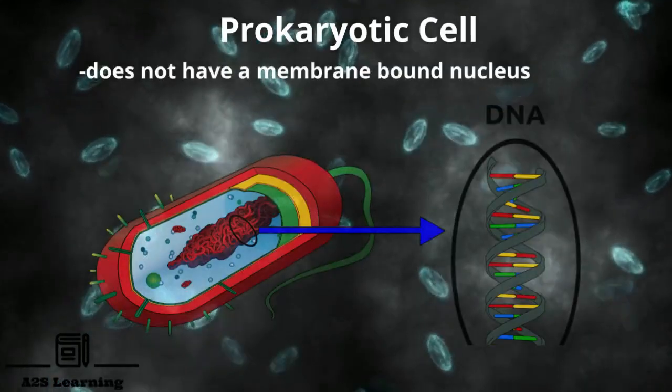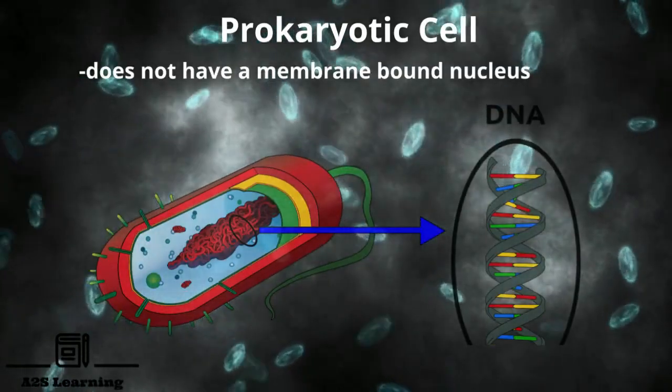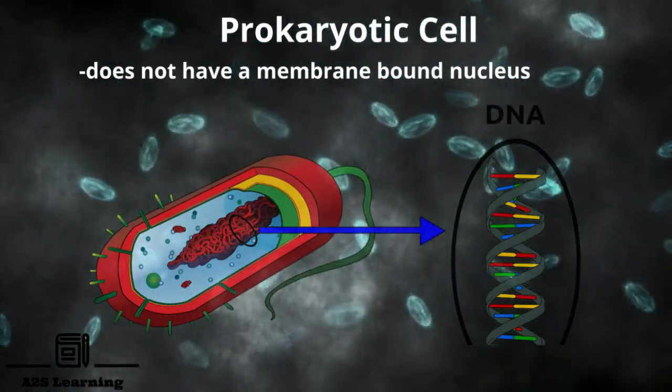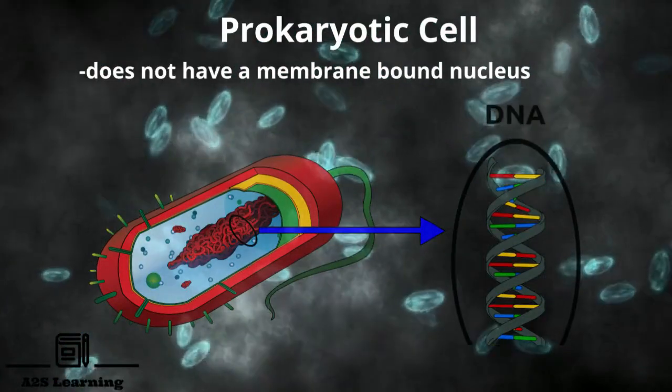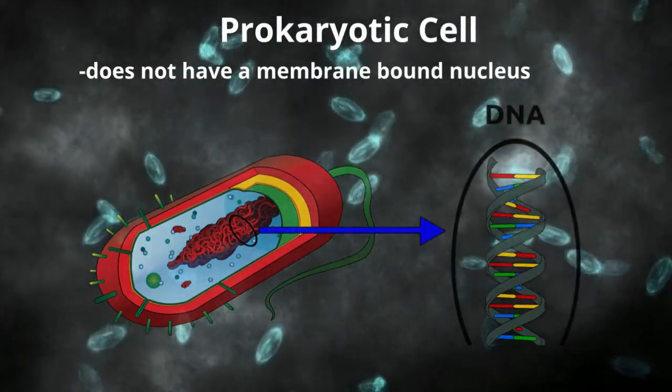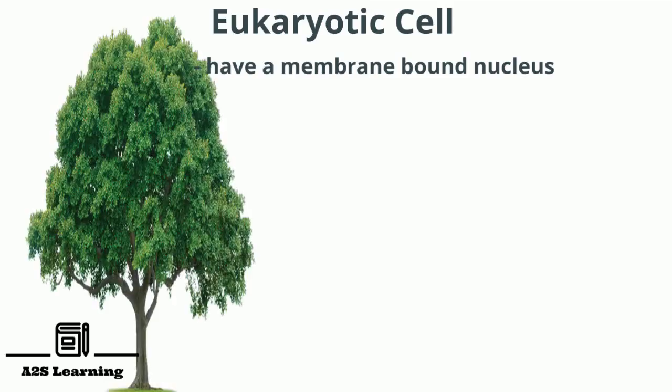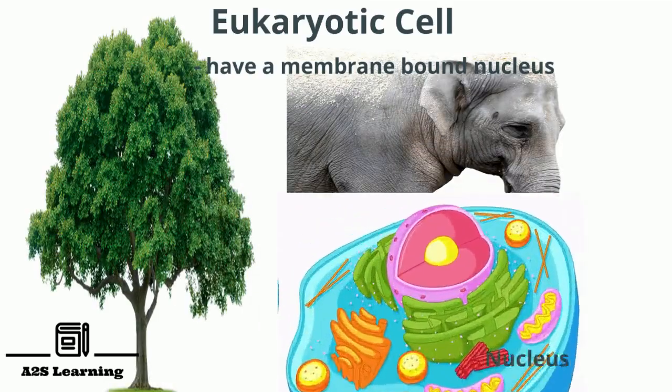Prokaryotic cells do not have membrane-bound nucleus. As seen in bacteria, the DNA here is bundled together in nucleoid region, but it is not stored within a membrane-bound nucleus. Whereas eukaryotic cells such as plants and animals have a membrane-bound nucleus.